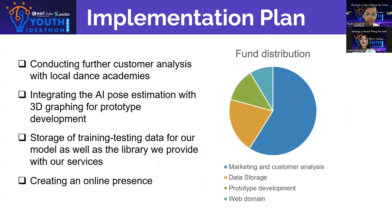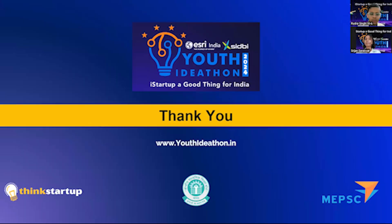Now to implement the 1000 rupees grant, we will perform customer analysis by contacting local academies and create a presence online with a web domain, and try to create the first version of the app by integrating all the features together that we have tested. We would also require funds for the data storage of training and testing data.